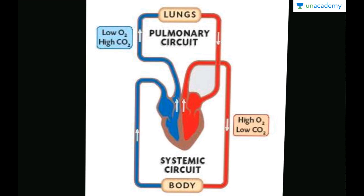Combined, both of these loops is known as double circulation, and it is the characteristic of mammals. From the left ventricle the oxygenated blood goes into the body — this is the systemic circuit — and back through the veins into the right atrium. From the right atrium through the right ventricle it goes into the pulmonary circuit with low oxygen and high CO2, enters the lungs, and brings back oxygenated blood with high O2 and low CO2.